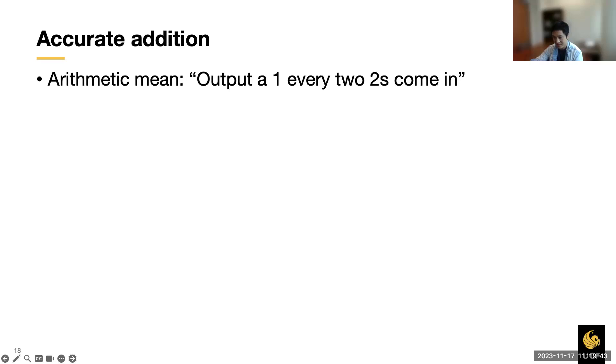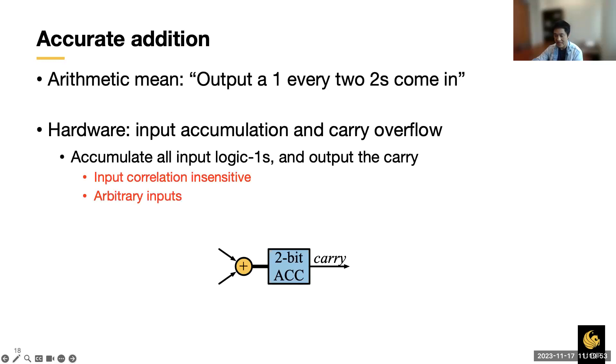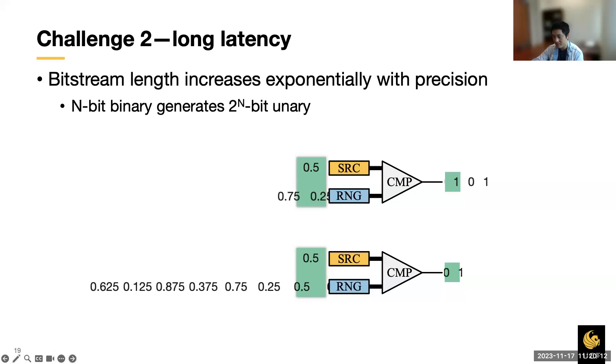To obtain accurate addition, recall that we are calculating the arithmetic mean of all the input. With two inputs, we just need to output a 1 every two 1s come in. The correspondent hardware is shown below. It performs the input accumulation to accumulate all the input 1s and overflow the carry as the output. This circuit does not put any correlation constraints on the input resulting in high accuracy. By now we have solved the accuracy problem in unary multiplication and addition.